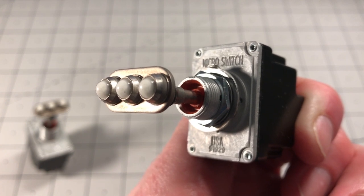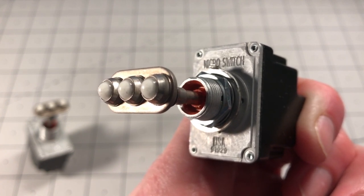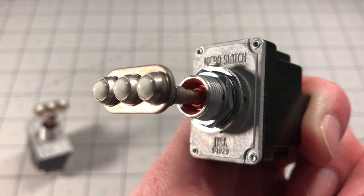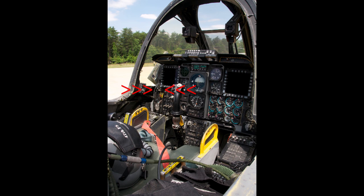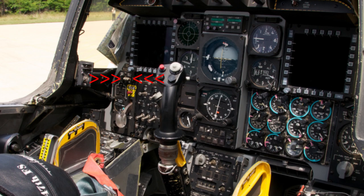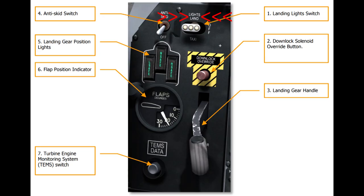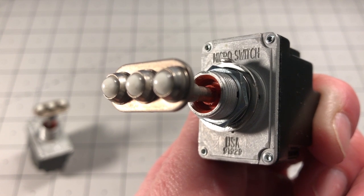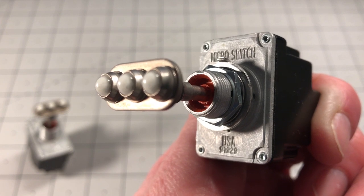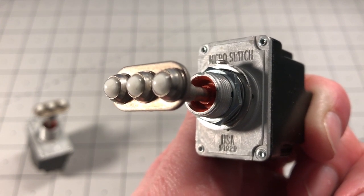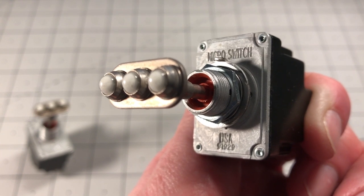Here's the Honeywell 2TL6 toggle switch used to control the landing lights in the A10C. Here's a view of the landing gear panel in the cockpit, closer up, and then the relevant page from the DCS A10C manual. We'll have a look at the data sheet for the switch, where you can buy them online, and I'll leave some close-up pictures of the switch.